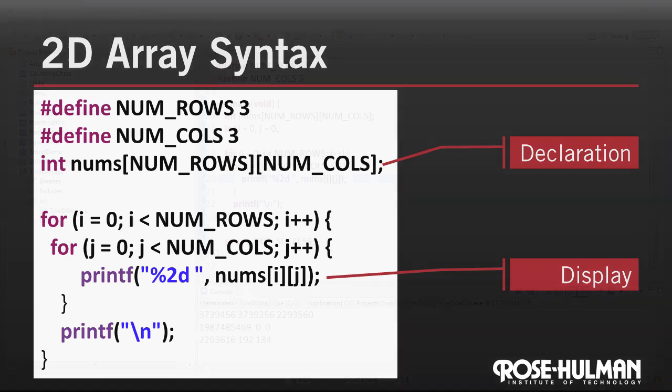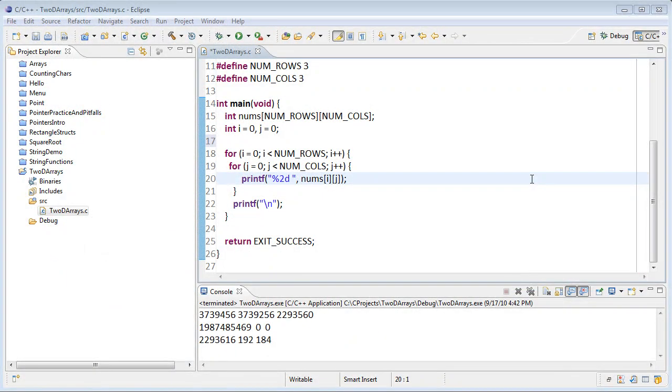Let's see this in Eclipse. Here's the same code in Eclipse. You'll notice on line 20 here that where we're actually doing the printing, in order to access an element of a 2D array, we use two square brackets, one with a row, which is i, and one with a column, which is j.